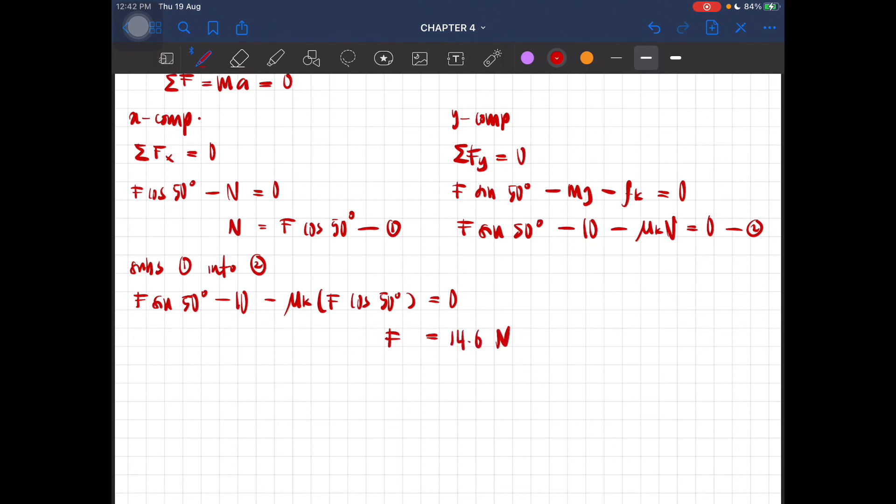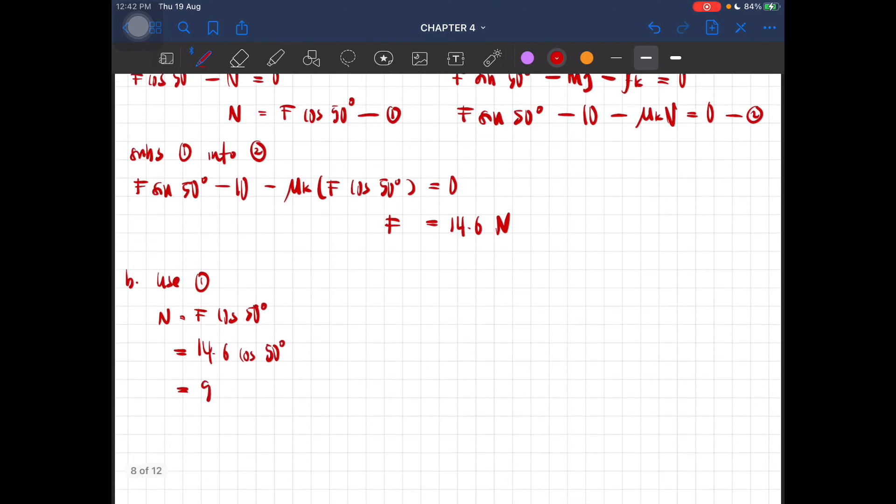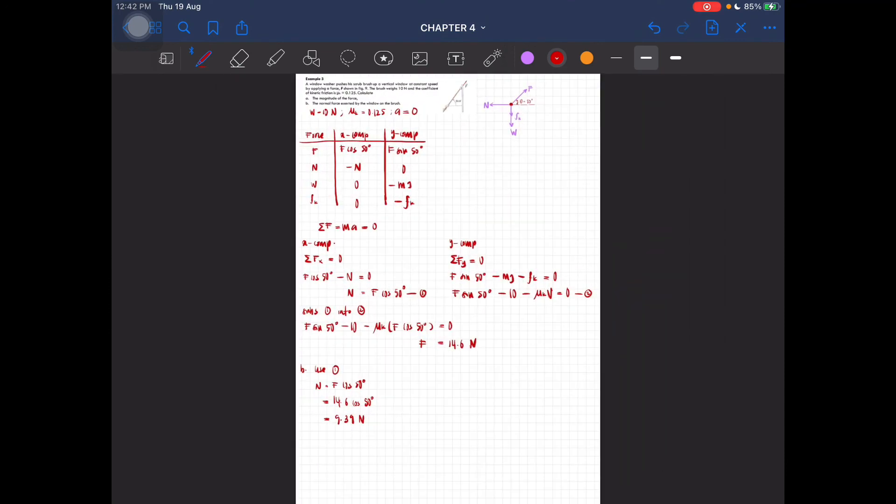Alright, and the next one, we have to find the normal force. So we can use equation one where N is equal to F cos 50 degrees. So our value of normal force is 14.6 times cos 50 degrees equal to 9.39 newtons. Okay, so this is how you solve for example number three.